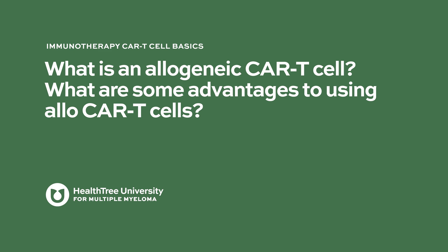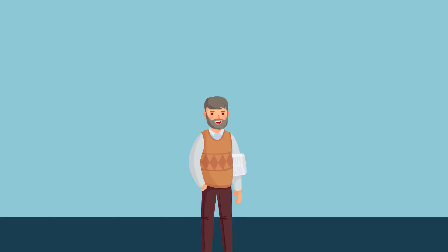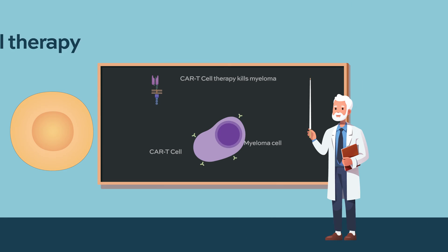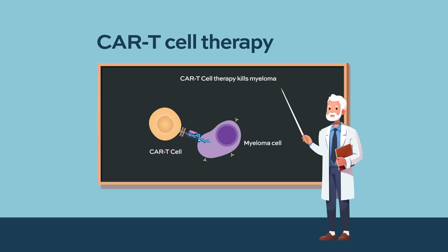What is an allogeneic CAR T cell, and what are some of the advantages to using allo CAR T cells? CAR T treatment is when we take T cells from a patient and train those T cells to recognize and fight multiple myeloma. One of the reasons patients develop multiple myeloma is because our immune system cannot see plasma cells as a malignancy, so the T cell's job is to kill those plasma cells.